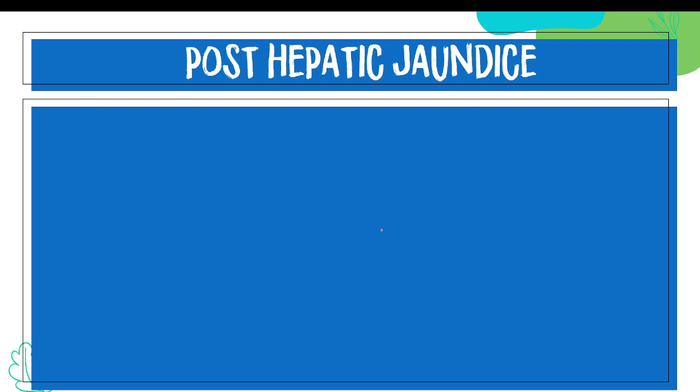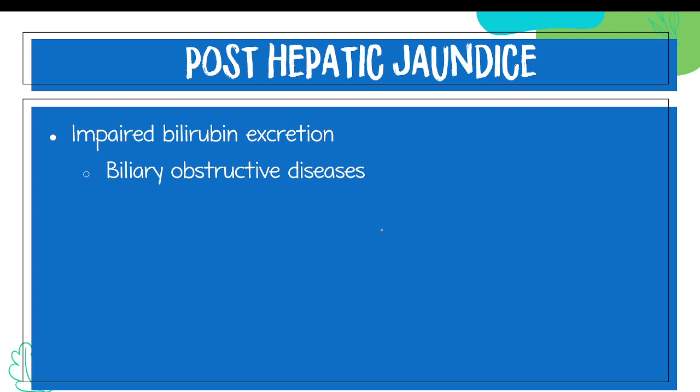With post-hepatic jaundice, this happens after your liver. The common reason is impaired bilirubin excretion. The usual conditions include biliary obstructive diseases, such as the presence of a gallstone or a tumor in your liver. Since we are talking about after the liver, the expected type of bilirubin elevated will be bilirubin 2, meaning that the liver here is properly functioning. The problem is in terms of excretion.